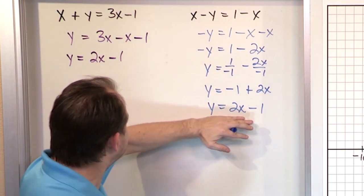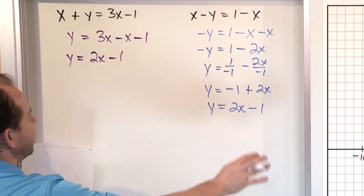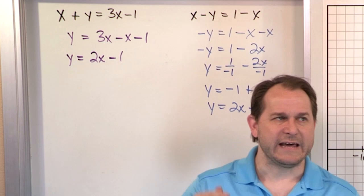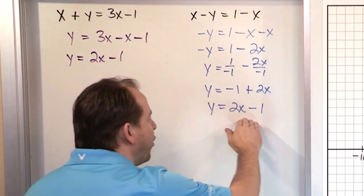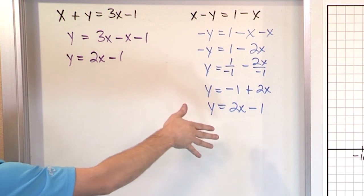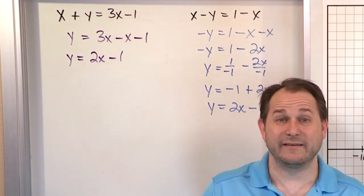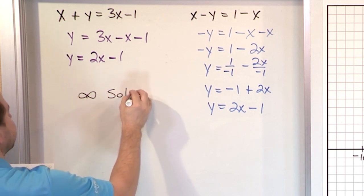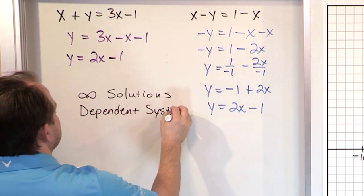So I get y is equal to 2x minus 1, and that's exactly what I had for the other equation. So without graphing anything, you know right away this is totally different than the other systems of equations we've looked at. But we did talk about dependent systems before. If you get your equations down to the point where they end up being the same equation, what it means is that all of the points on this line are the exact same set of points on the other line because they're the same thing. So there's an infinite number of solutions. All you really need to do is write down that there are infinite solutions, and it's a dependent system of equations.